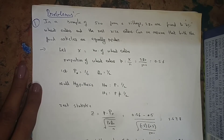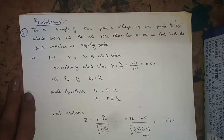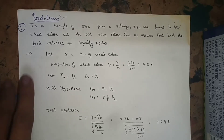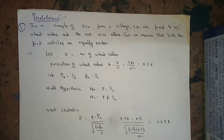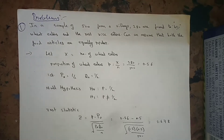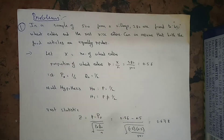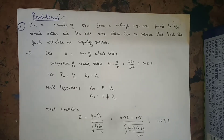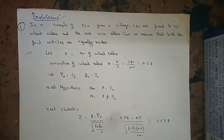First problem: In a sample of 500 from a village, 280 are found to be wheat eaters and the rest are rice eaters. Can we assume that both food articles are equally popular? Here n = 500, which is greater than 30, so this is a large sample.